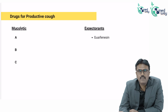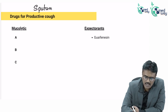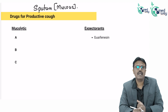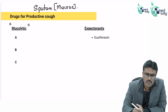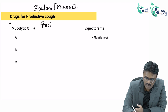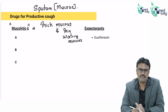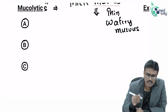Moving on to productive cough — there is sputum produced in the lungs. Sputum is the mucus present in the lungs. When mucus becomes thick, it is very difficult to remove. So we use a group of drugs called mucolytics. Mucolytics make the thick sputum into thin, watery secretions so that it can come out of the lungs.